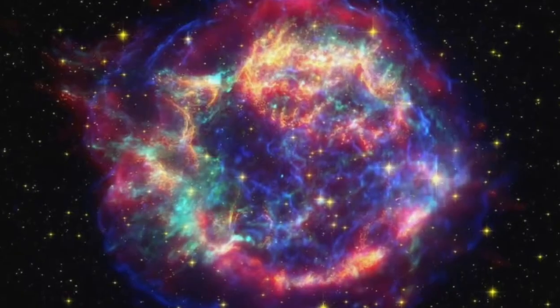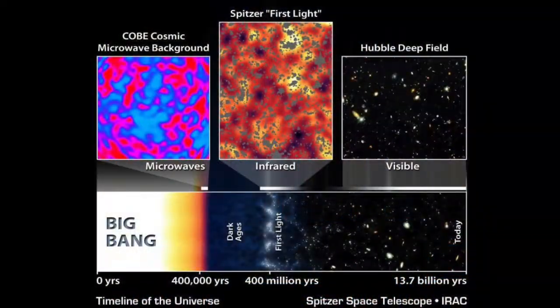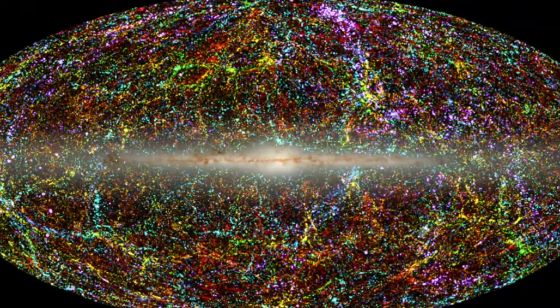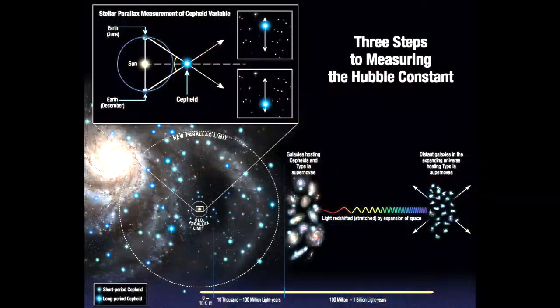These observed phenomena include the abundance of light elements, the cosmic microwave background radiation — this one is important — the large-scale structure, and Hubble's law, which states that the farther away galaxies are, the faster they are moving away from Earth.